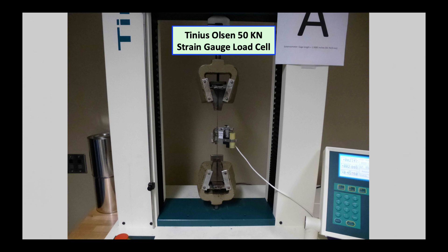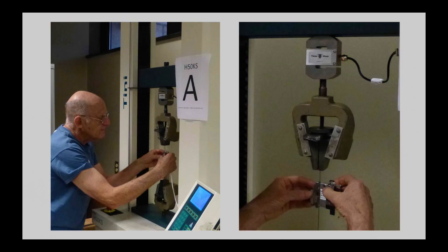This is the apparatus I used, it's a Tinius Olsen 50 kN strain gauge load cell. On the left, I'm fitting a spoke into the jaws of the load cell and on the right, attaching the extensometer to it.